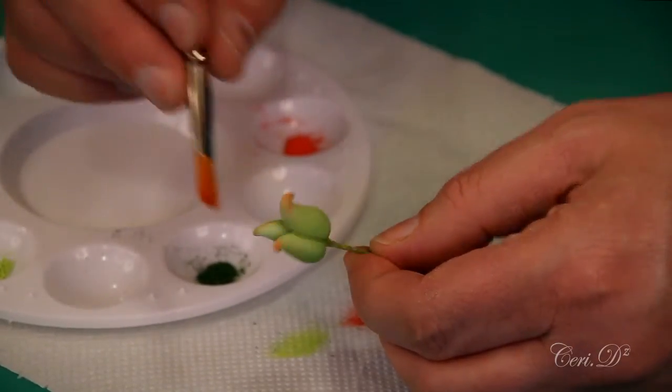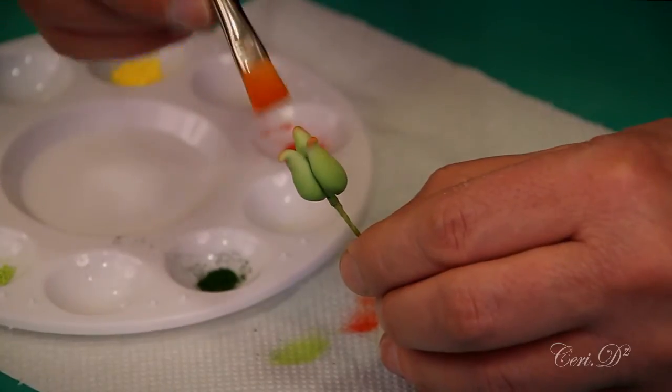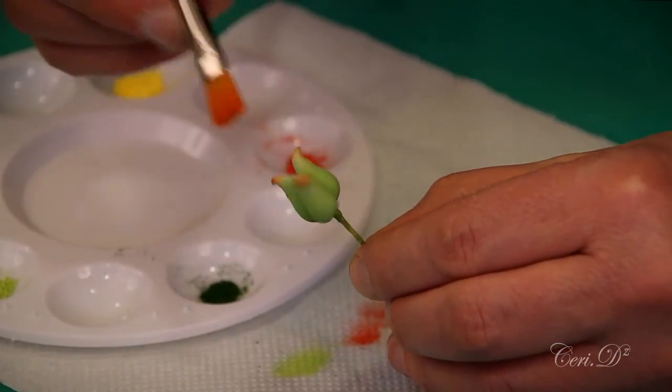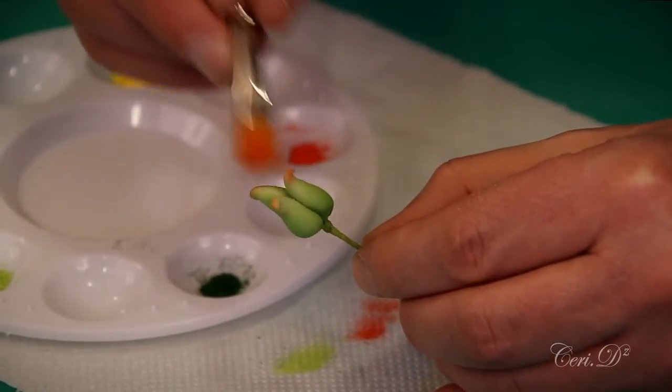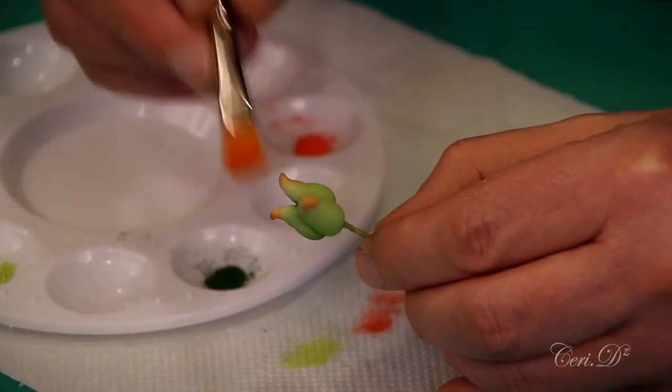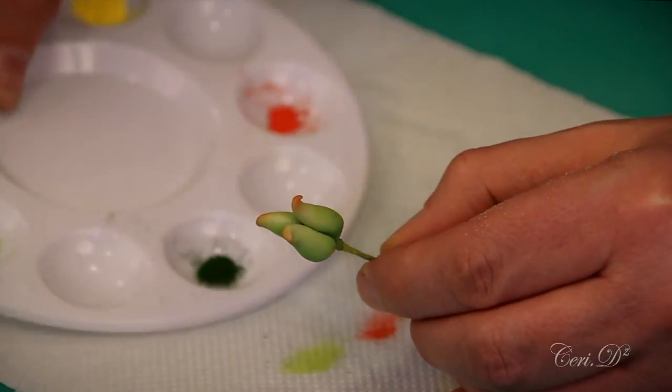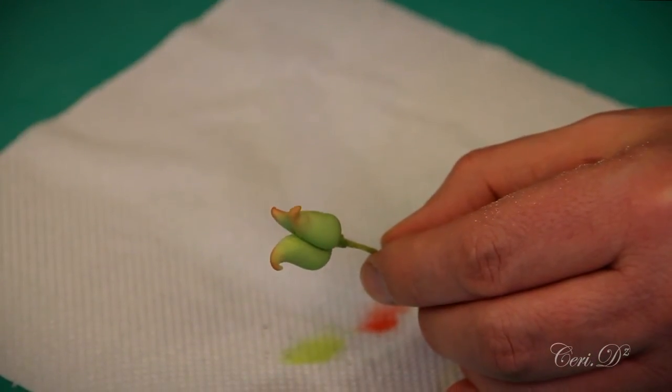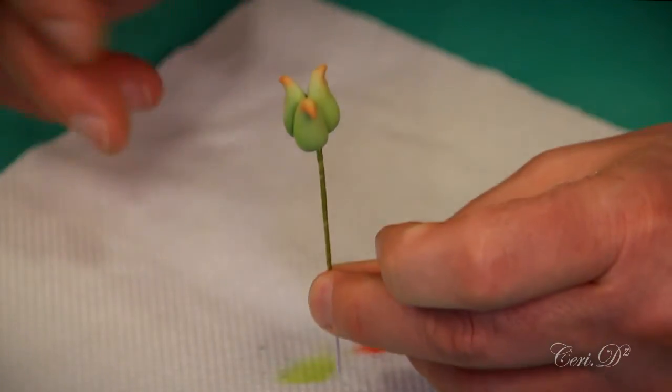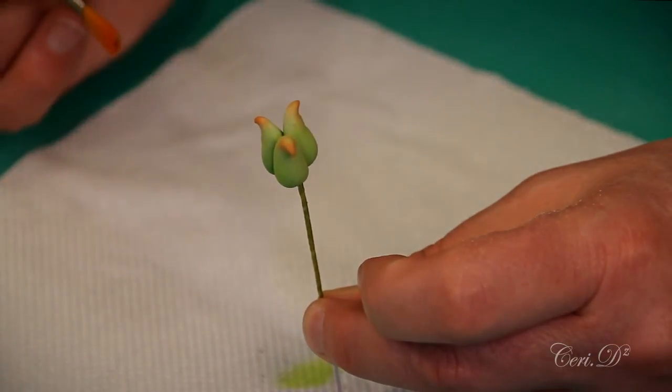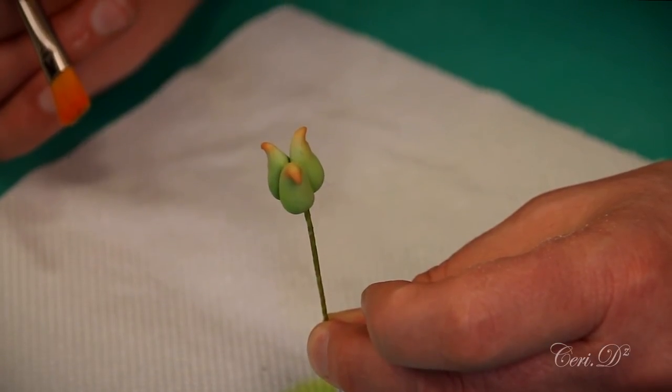Now I would recommend doing these 24 hours in advance of you putting the stamens on, which is actually the next stage. So let's put that to one side. As I said, I would then leave that secure, put it into a bit of styrofoam, stand it up, let the air circulate it, and we'll come back to that in the next lesson for attaching the stamens.